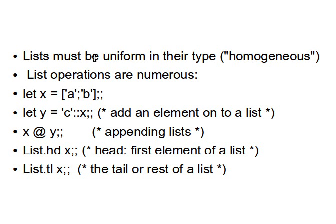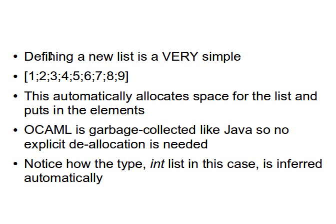Lists must be uniform — that is, they must be homogeneous, meaning all elements must be of the same type. If you have a list of primitive types like integers, floats, strings, characters, or booleans, that's fine. You can also have a list of union types — I covered unions in the OCaml tutorial series around video 28 or 29, where I explained records and unions.